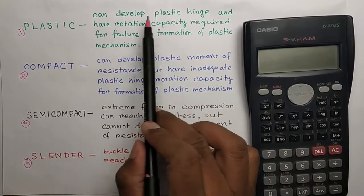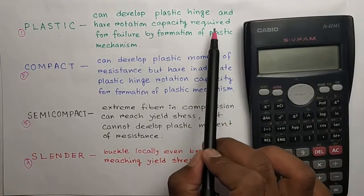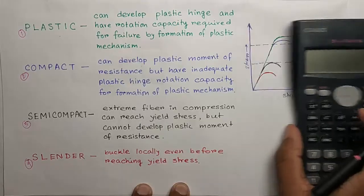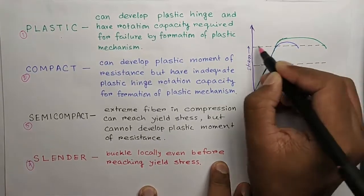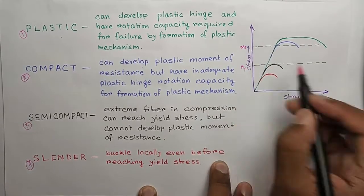Plastic section can develop plastic hinge and have a rotation capacity required for the failure by the formation of plastic mechanism. You can easily understand by this graph. This is stress versus strain graph. This line is showing plastic moment and this is moment at the yield point.